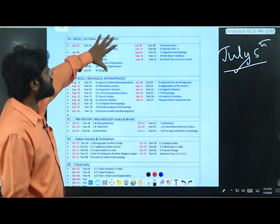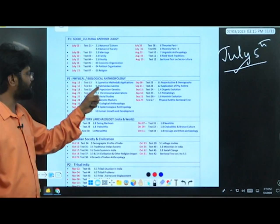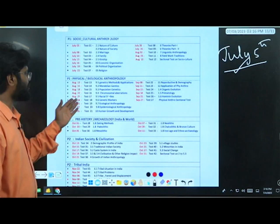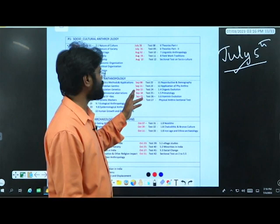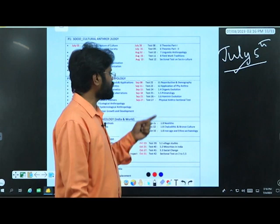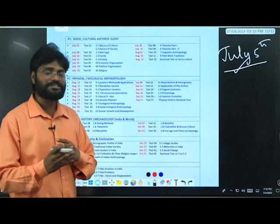Next you will go to physical or biological anthropology. Test number 13 August 13 - human genetics methods and application, August 15 Mendelian genetics, August 18 population genetics, August 22 chromosomal operations, August 25 racial studies, August 29 genetic markers, August 31 ecological anthropology, September 2 epidemiological anthropology, September 5 human growth and development, September 8 reproductive and demographic anthropology, September 11 applications of physical anthropology, September 15 organic evolution, September 18 primatology, September 21 hominin evolution. September 28, test number 27, you will write the sectional test on physical anthropology for 250 marks.